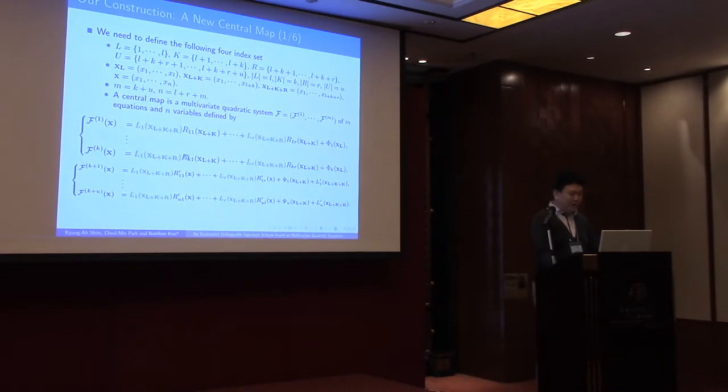In the first layer, there are K polynomials that is the sum of L_j times R_ij for j from 1 to r, and a quadratic polynomial phi_i. Each polynomial in the second layer is the sum of L_j times R'_ij for j from 1 to r, and a quadratic polynomial psi_i, and a linear polynomial L'_ij.